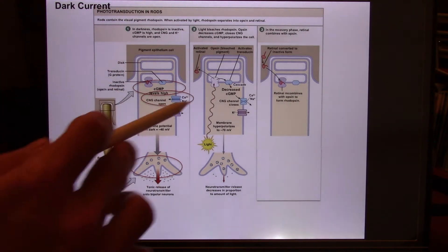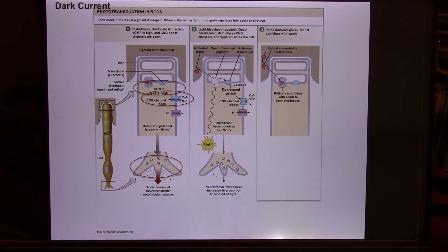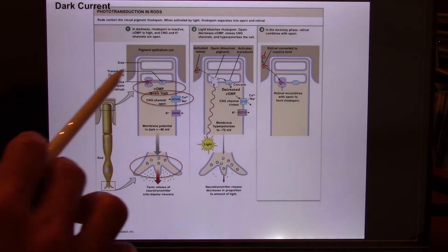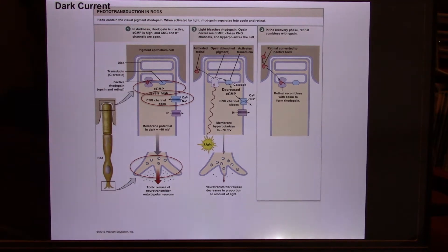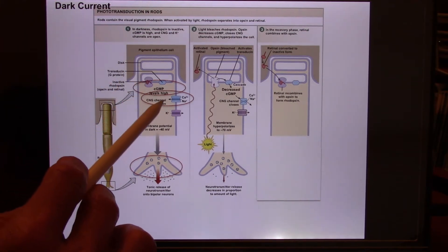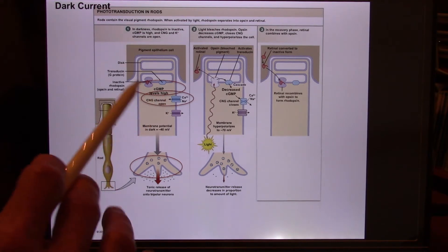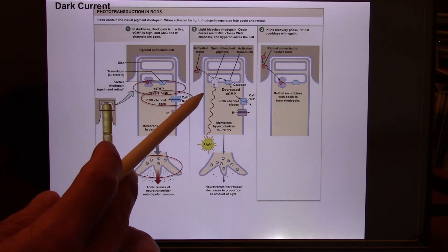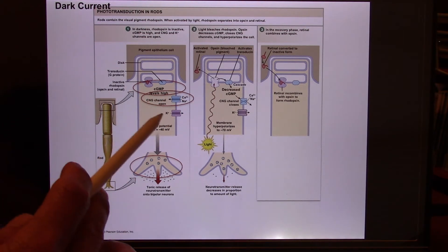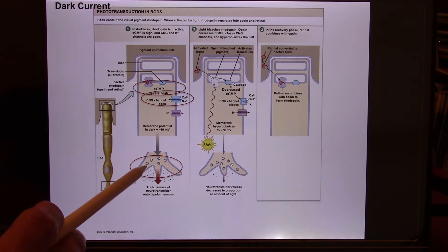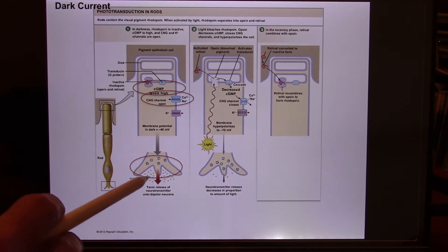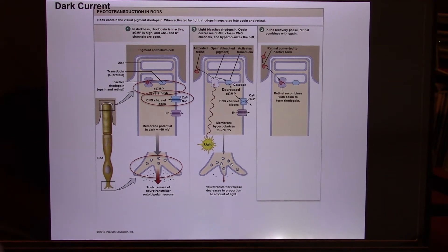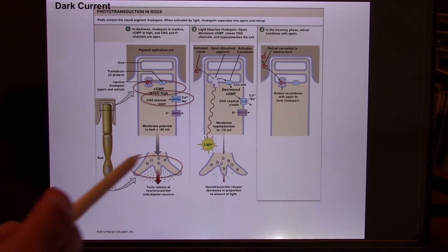Let's look at the signal transduction. When there is no light, there is a lot of second messenger — cyclic GMP. Cyclic GMP can open a lot of cyclic GMP-gated ion channels. When this ion channel opens, it's a non-selective cation channel, so calcium and sodium flow in. When they flow in, it depolarizes the cell. When it depolarizes, it triggers exocytosis and neurotransmitter release. So when there is no light — when you're in a completely dark room — your rods and cones actually release neurotransmitter like crazy.